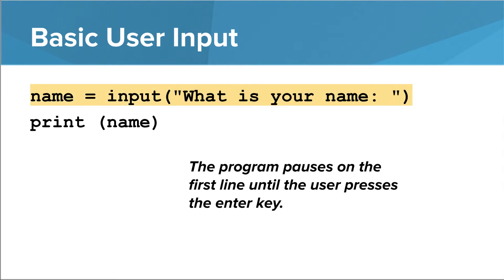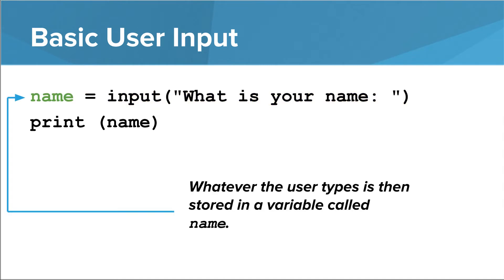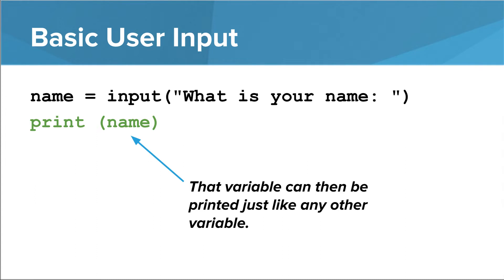What happens when you run this, and we'll see this in a second, is the interpreter actually pauses on this line and waits until the user types something and presses the enter key. Once the user is finished typing, whatever they typed is stored in a variable called name. Then as we've done in other programs, we can print out the variable name.